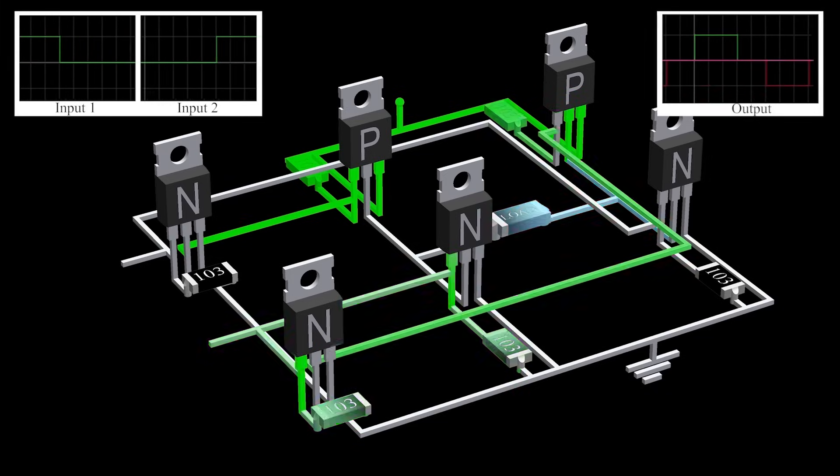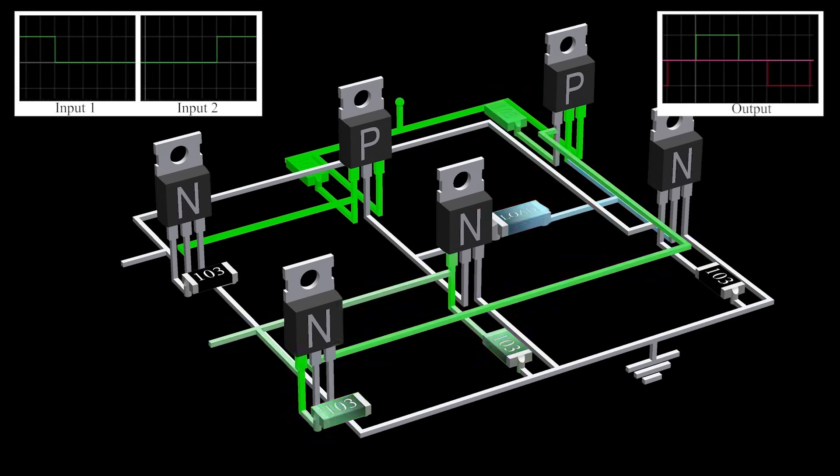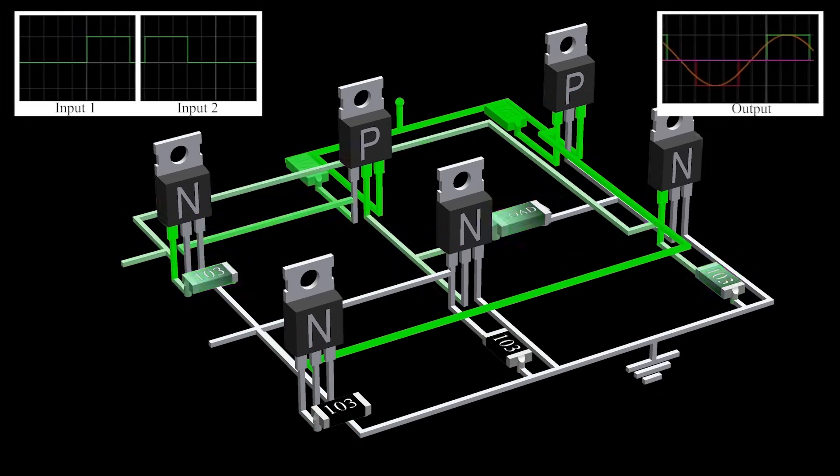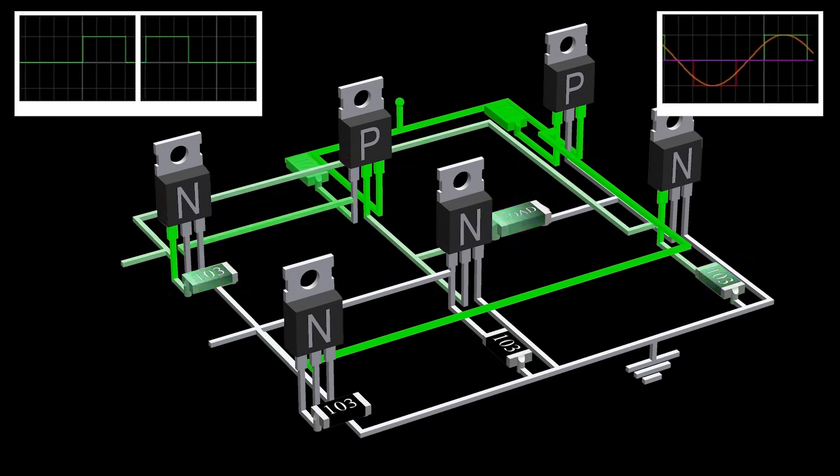This is achieved by decreasing the duty cycle of the PWM signal. This modified square wave is more similar to the sine wave than the square wave.